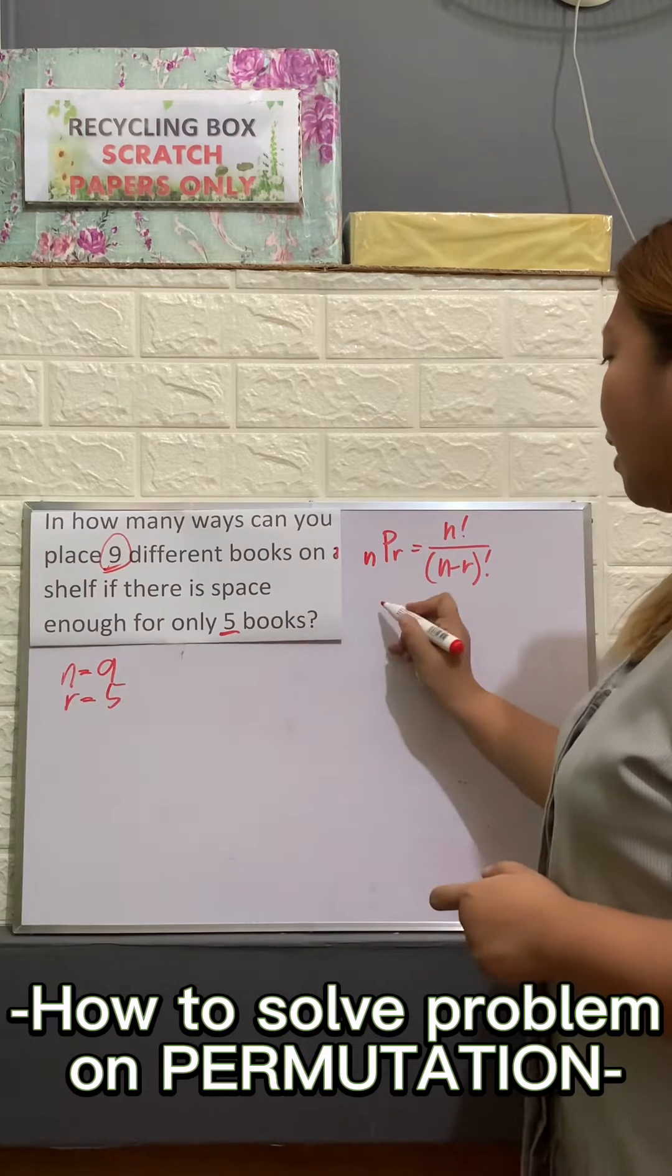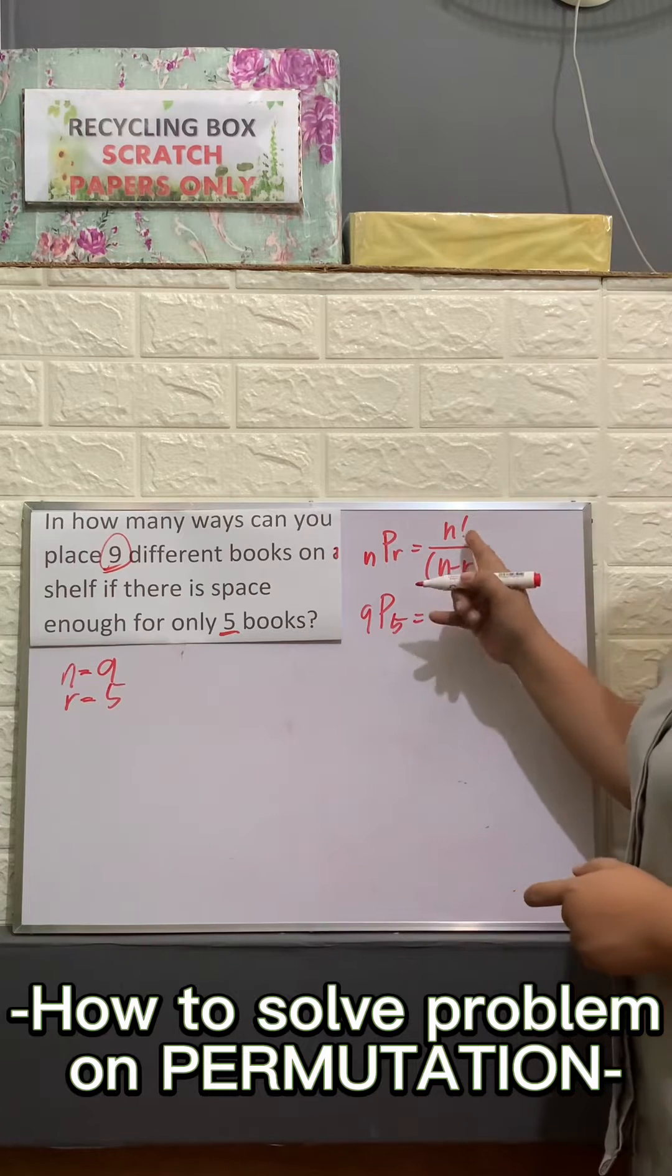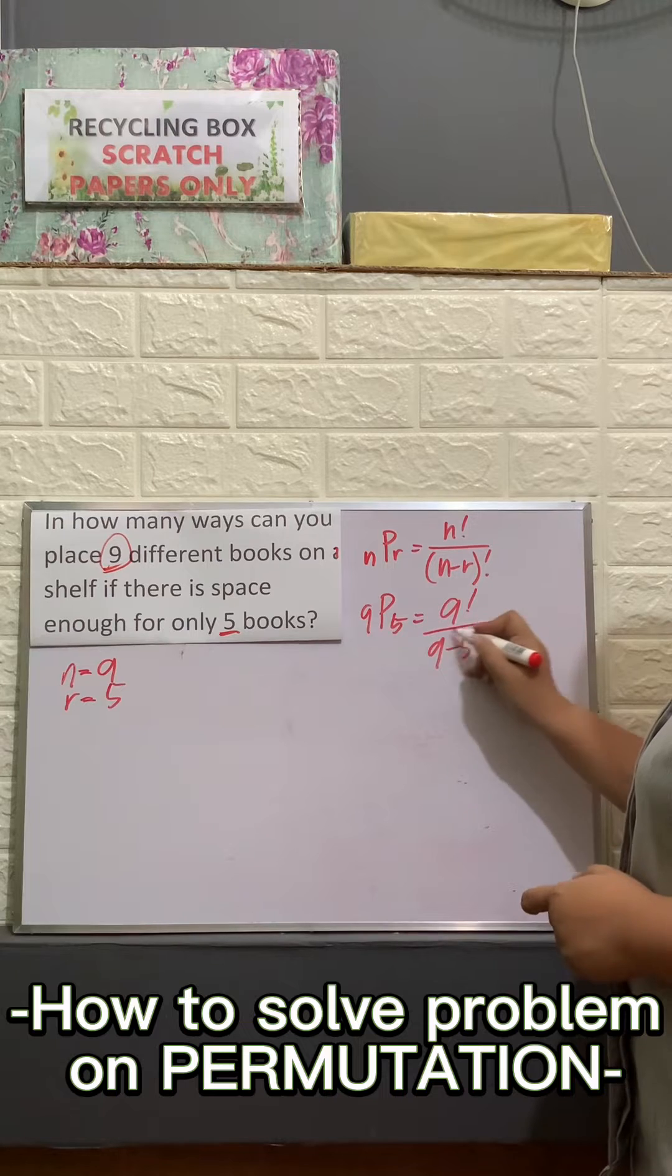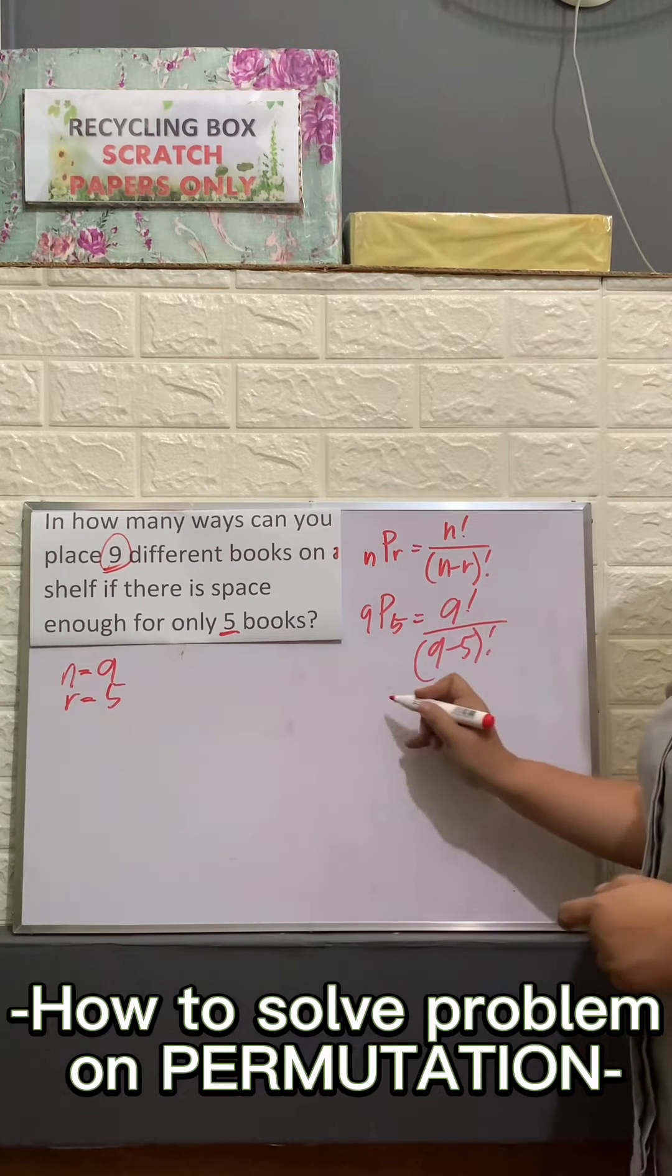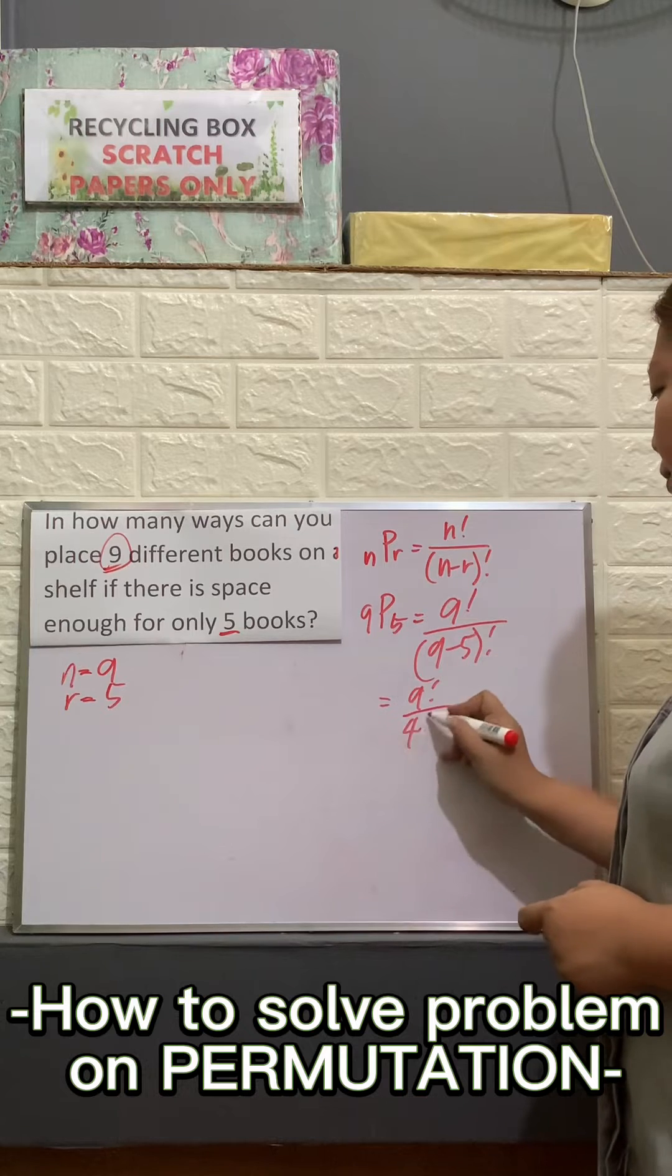You will have our N is 9. So, permutation of 9 taken 5. You will have 9 factorial over 9 minus 5 factorial. So, you will have 9 factorial over 9 minus 5 is 4 factorial.